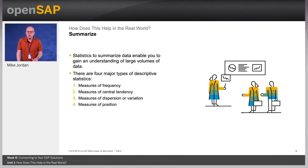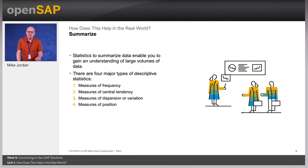There are four major types of descriptive statistics. Firstly, measures of frequency: count, percentage, frequency. Measures of central tendency: the mean, median, and mode. Measures of dispersion or variation: range, variance, standard deviation. And measures of position: percentile, ranks, and quartile.